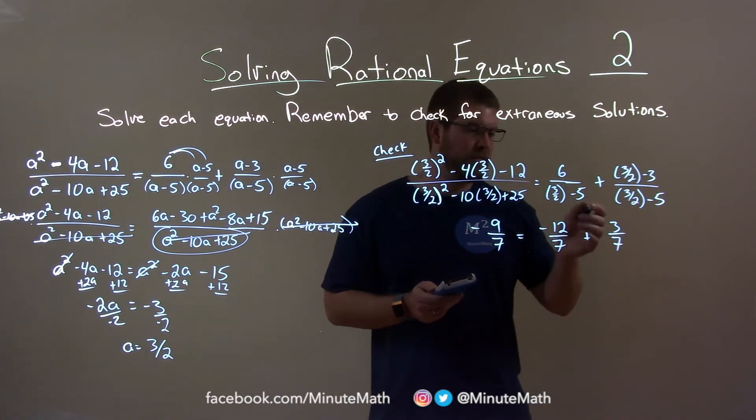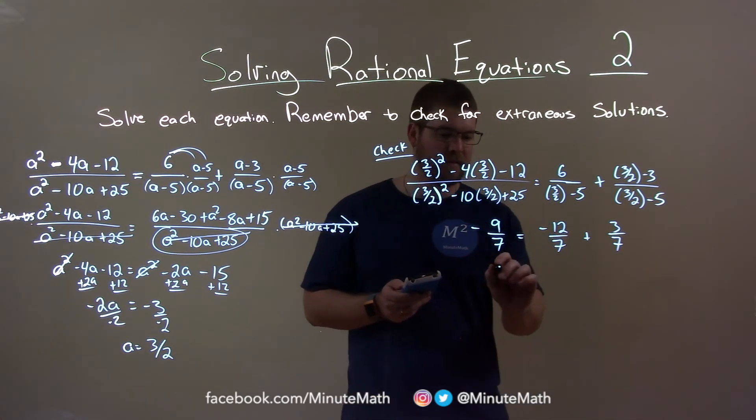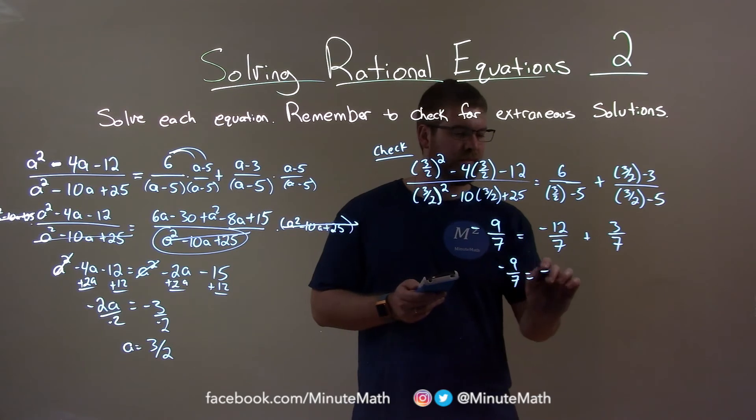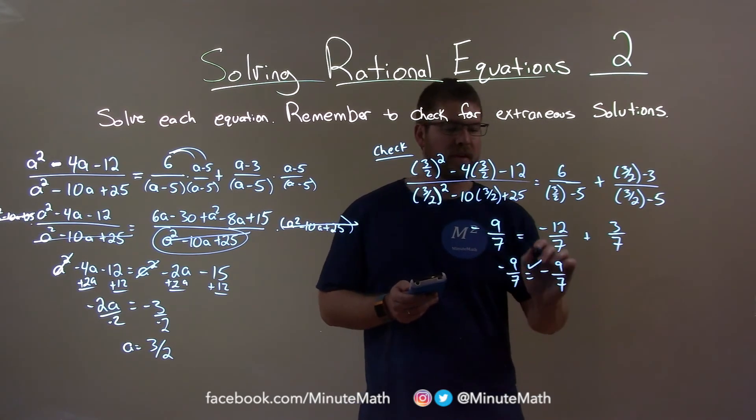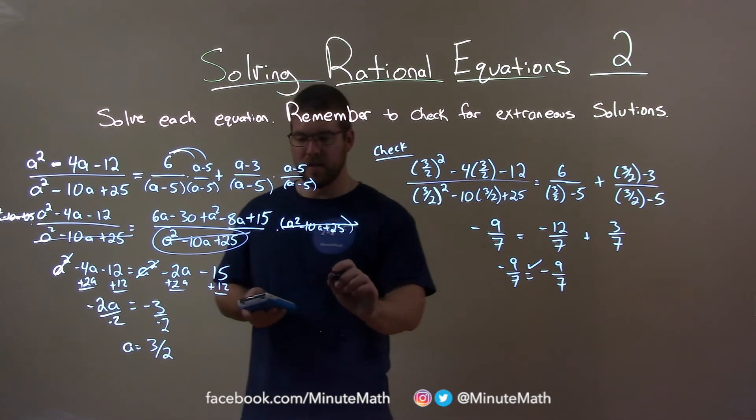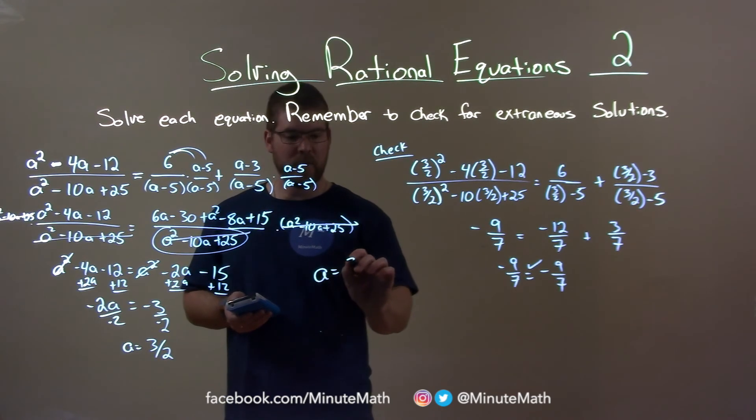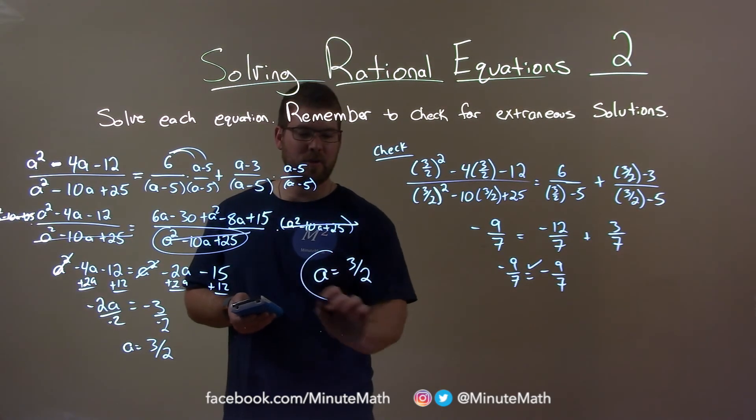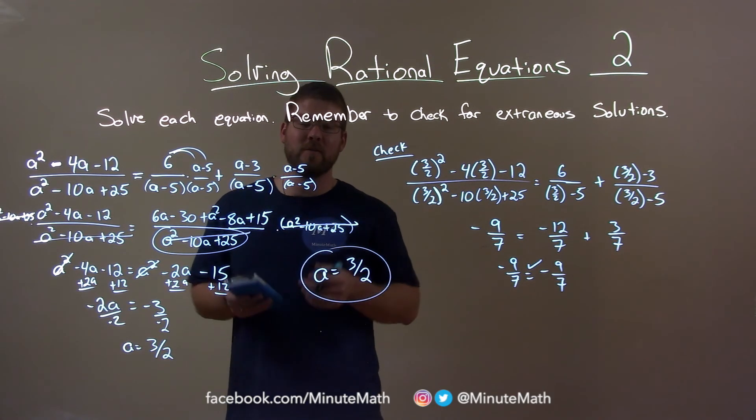Negative 12 sevenths plus 3 sevenths is negative 9 sevenths. So the left and right hand side are equal. Meaning that a equals positive 3 halves is a real solution and our final answer.